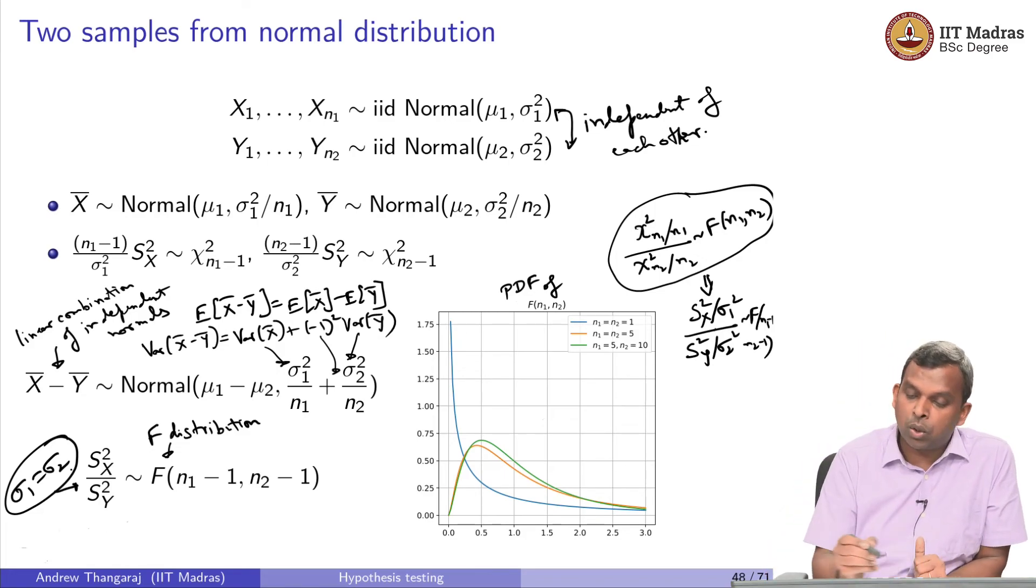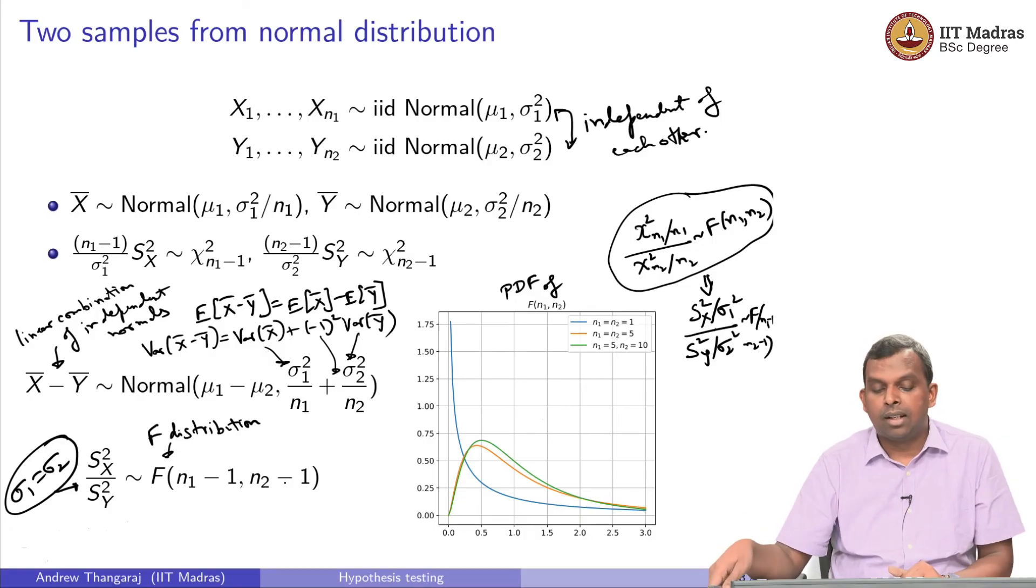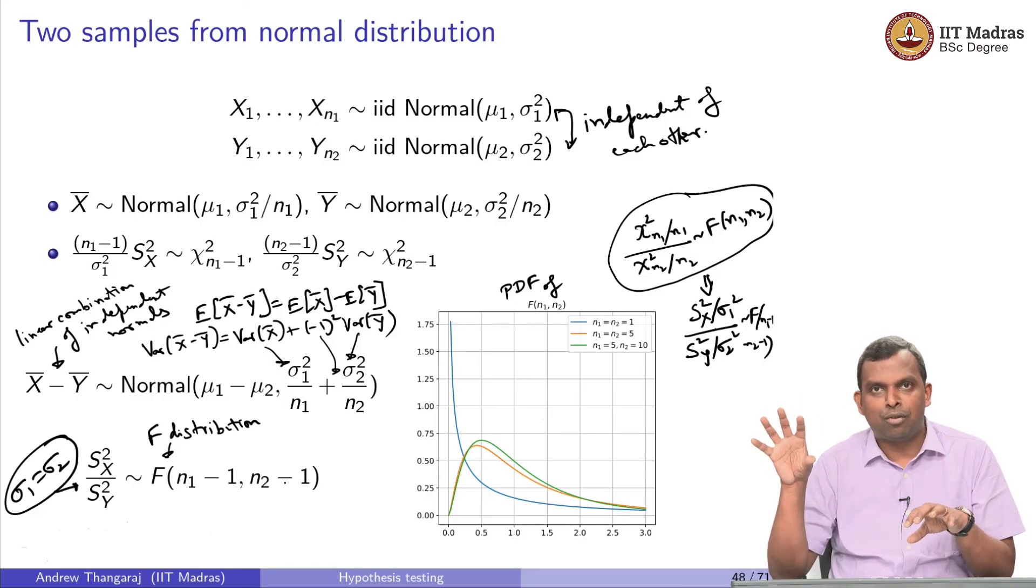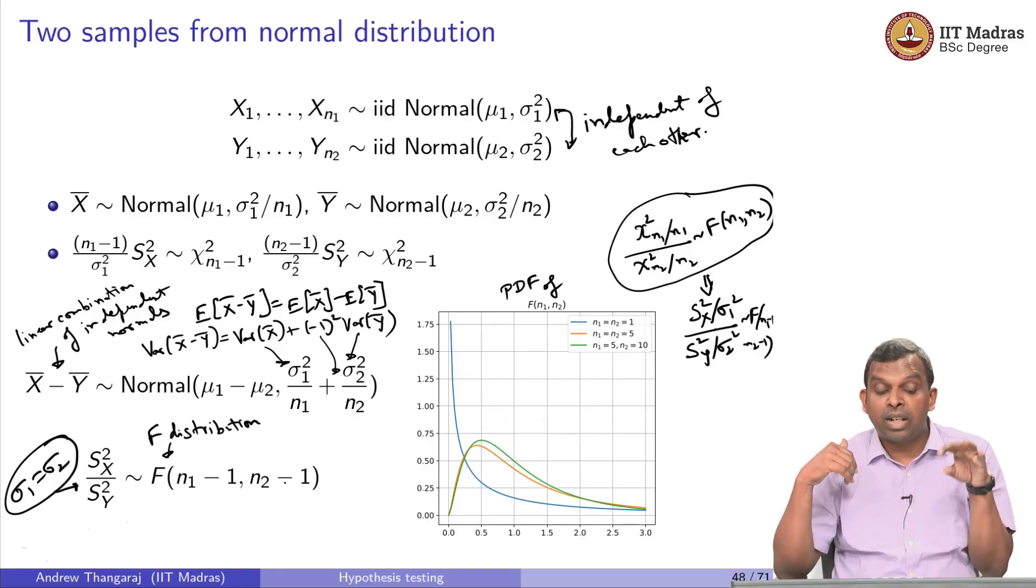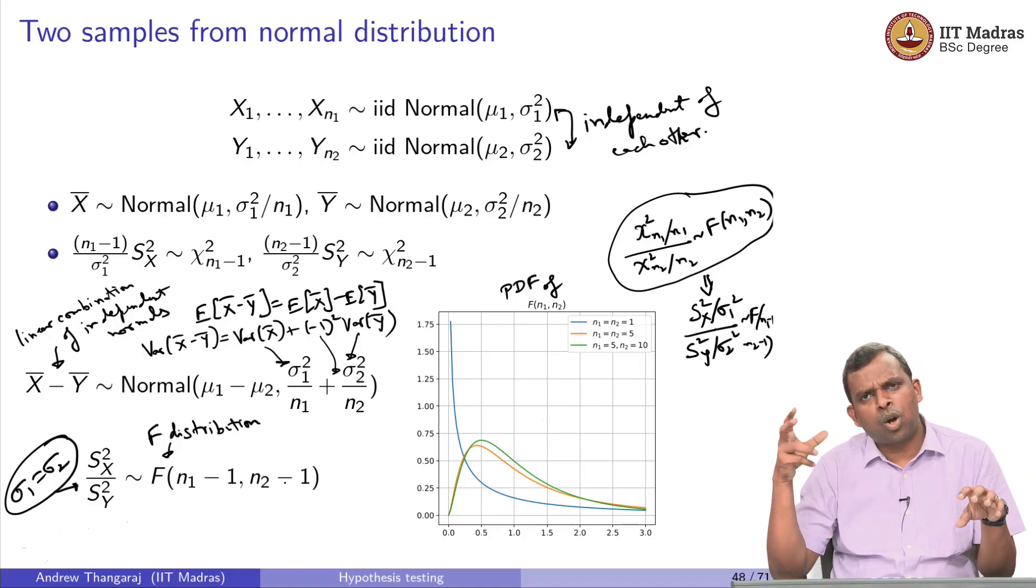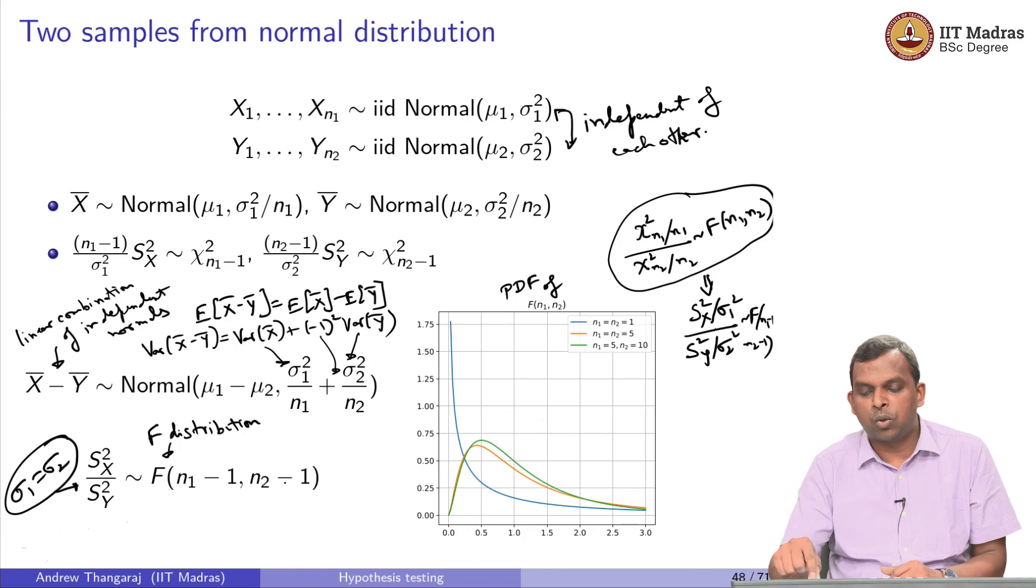Now, if σ1 is equal to σ2, you see that they cancel and Sx²/Sy² itself becomes this F distribution. So this is what is going on with distribution of two samples. Once again, remember X̄ minus Ȳ is normal, difference of mean, and the variances add for the sample means. The ratio of the two sample variances when σ1 and σ2 are equal is directly the F distribution. If σ1 and σ2 are not equal, the ratio will come there, that σ1²/σ2² will be in the F distribution. Maybe this result is important enough to note down.